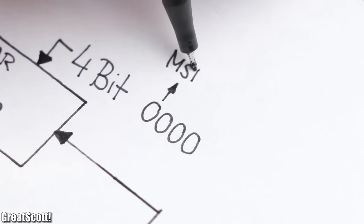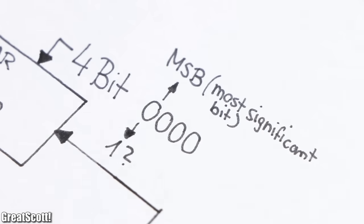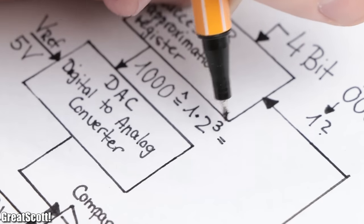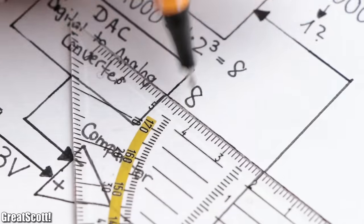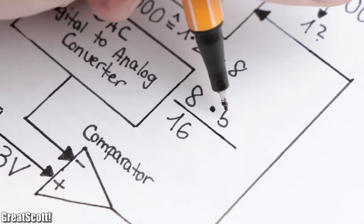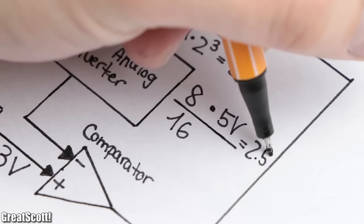The SAR then sets the MSB or most significant bit of the 4 bits to 1 and sends the value to the DAC. Since the received 4 bits represent a decimal value of 8, which is the half of the overall bit quantity, the output voltage of the DAC is also half of the reference voltage and thus 2.5 volts.